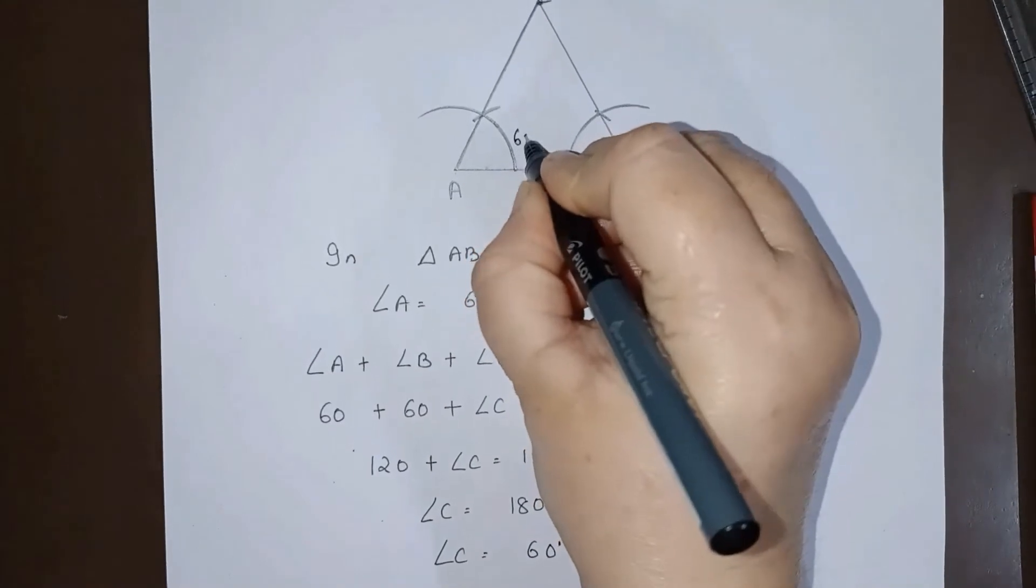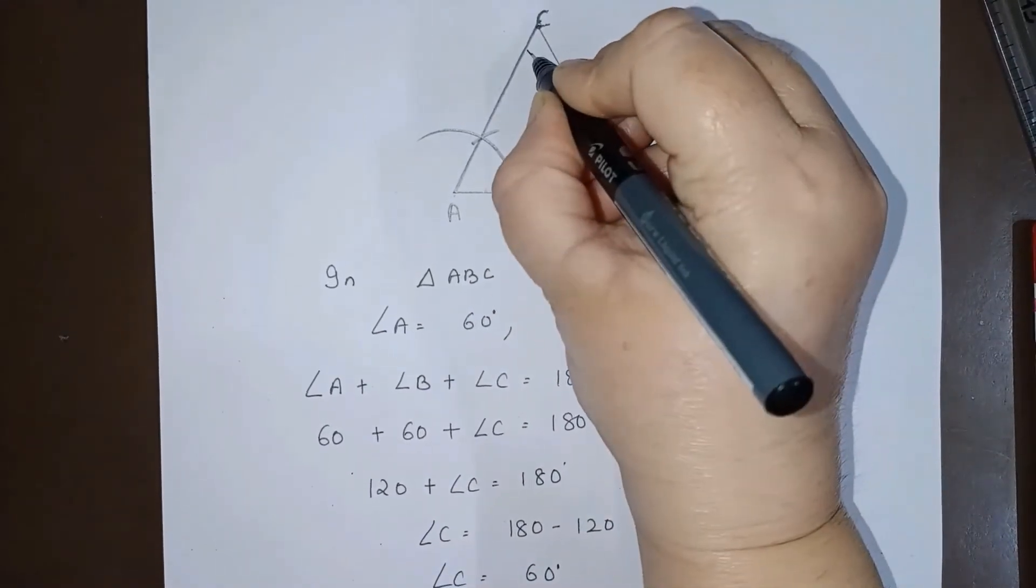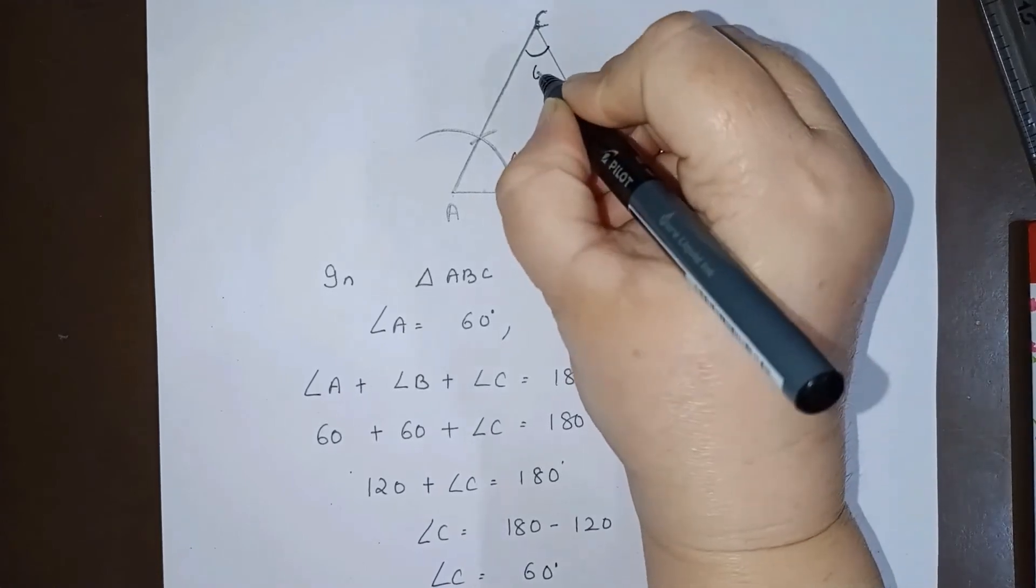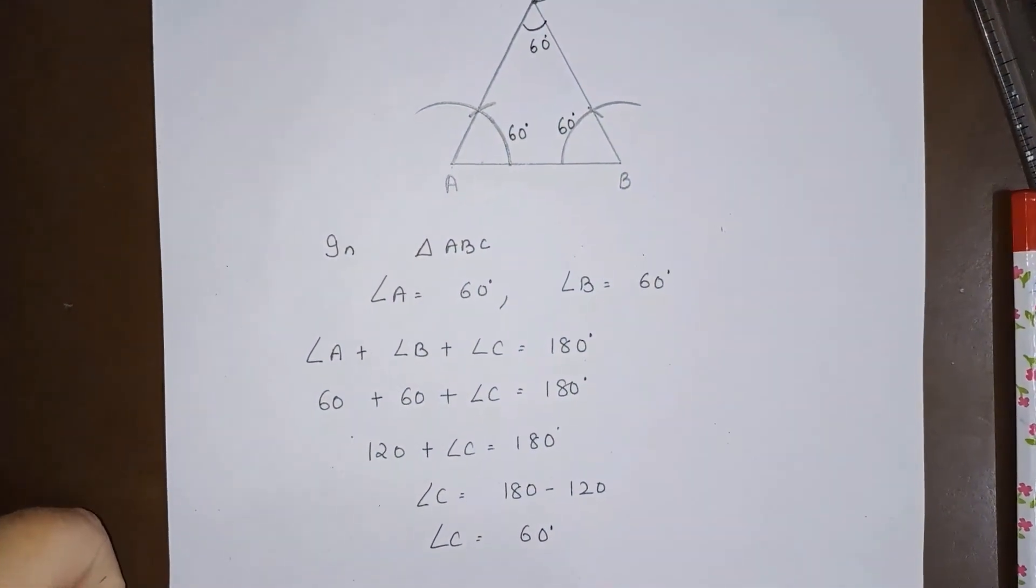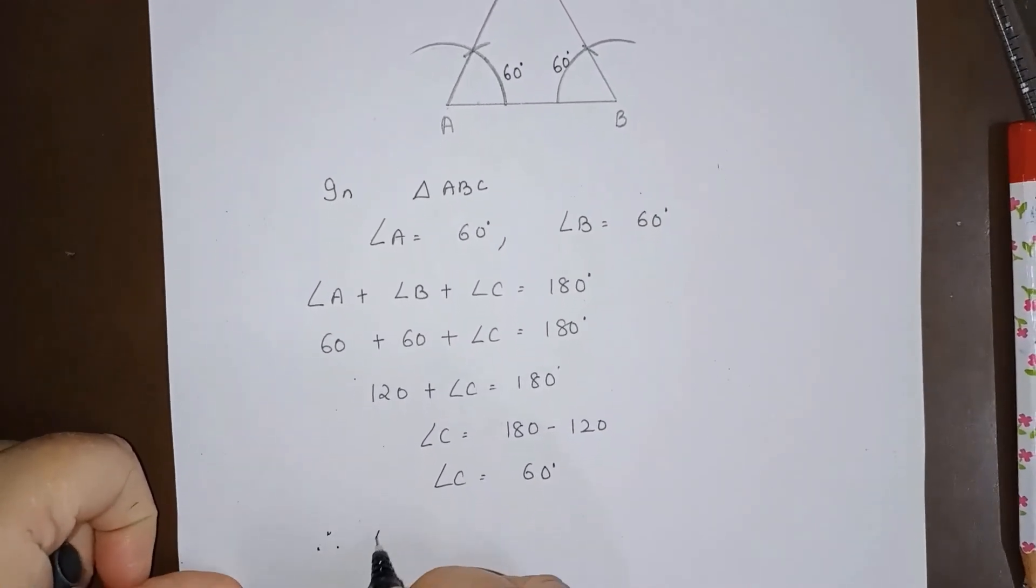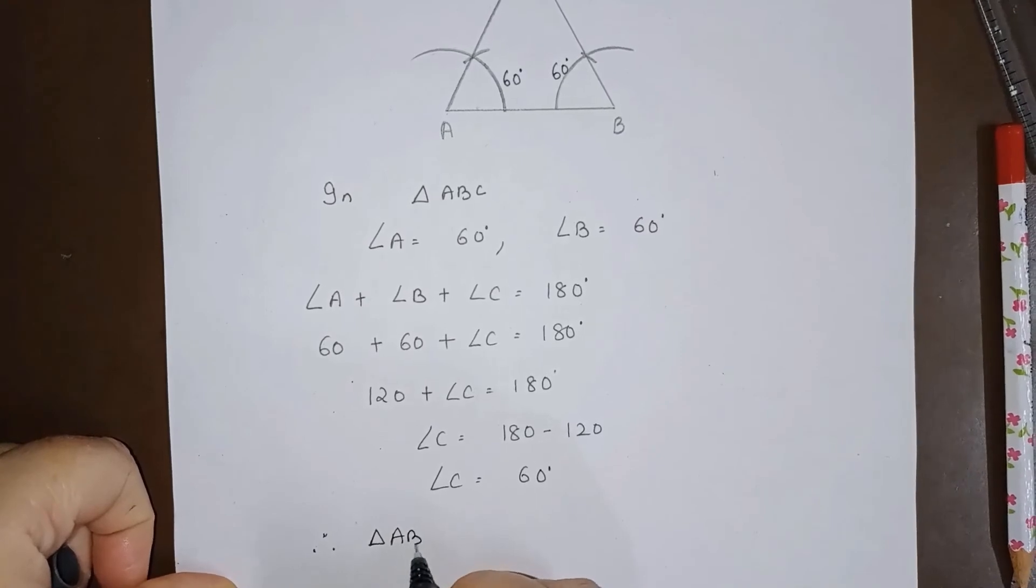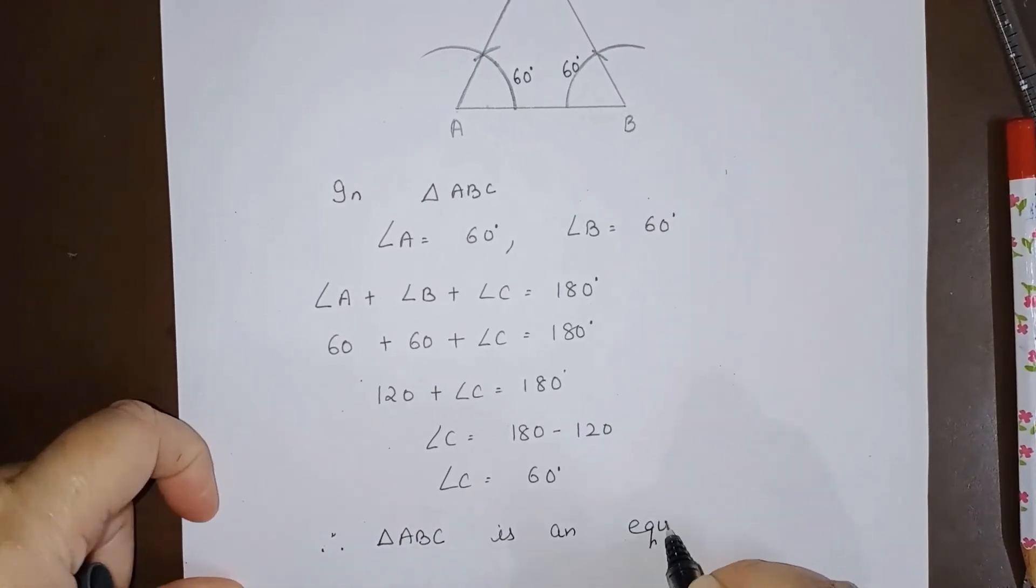Now you can see all the angles come out to be 60 degree. That is, all three angles are 60 degree. Therefore, triangle ABC is an equilateral triangle.